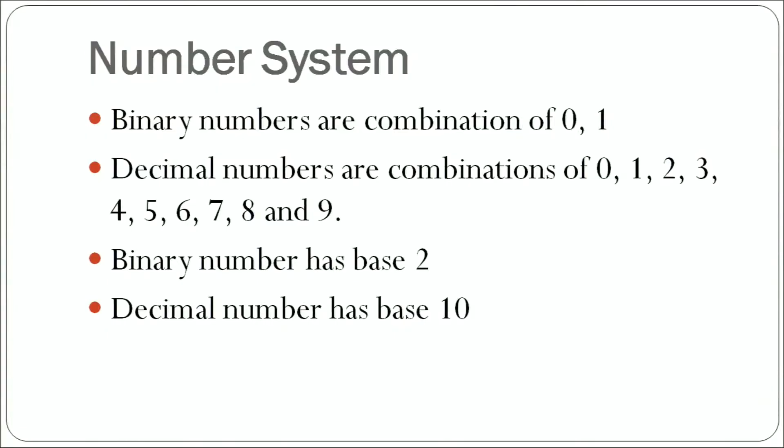So first of all, what is the number system? What are the different types of number systems that we have and how do we define them? The first and foremost type is binary numbers. Binary numbers are the combination of digits 0 and 1 only. These numbers use only these two digits and the combination of these digits defines the value of the number.